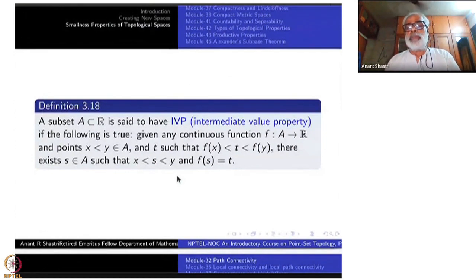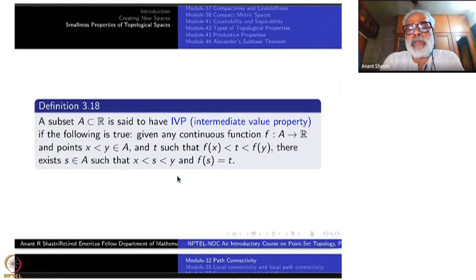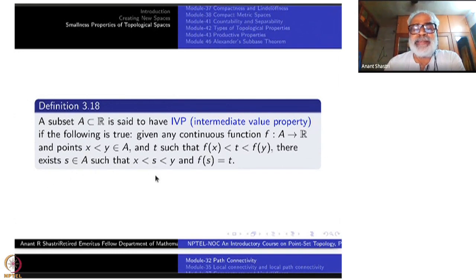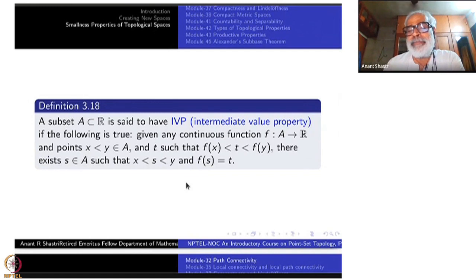I am redefining intermediate value property here. A subset A of R is said to have the intermediate value property if: given any continuous function F from A to R and points x less than y in A with F(x) less than t less than F(y), there must exist s in A such that x less than s less than y and F(s) = t. So whatever the statement of the Intermediate Value Theorem says, I have made it a property. The theorem says that if A is an interval, then this is true.